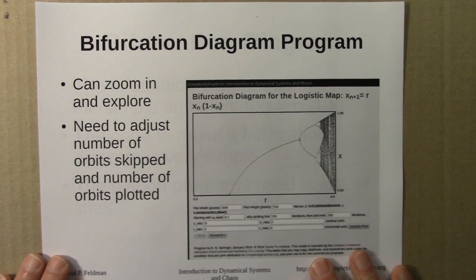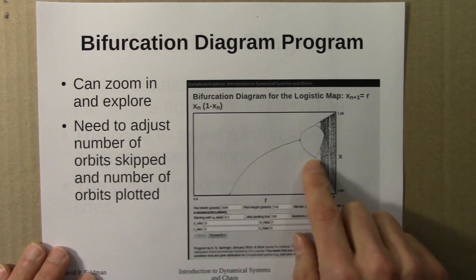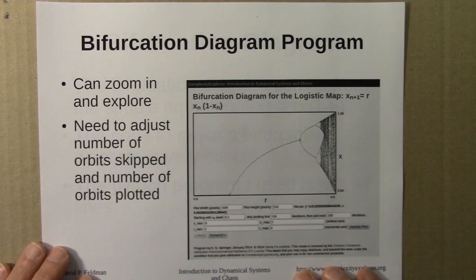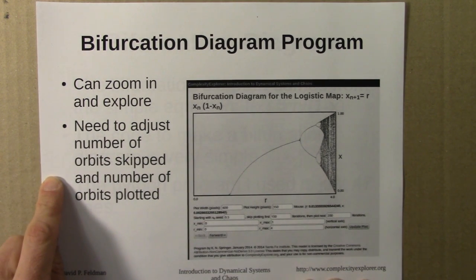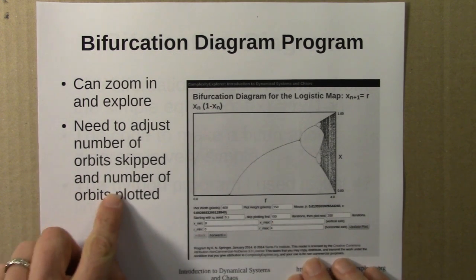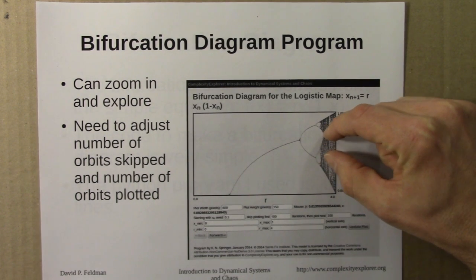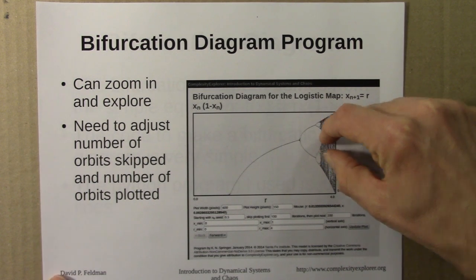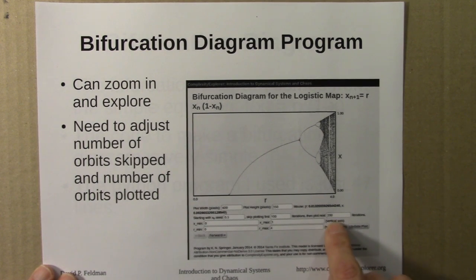I introduced a web program that lets you zoom in on the bifurcation diagram many, many times to explore what you see. Along the way, we sometimes needed to adjust the number of orbits skipped, which is necessary when there's long transient behavior — it takes a long time to reach the final states. Sometimes we also need to increase the number of orbits plotted when zoomed in a lot vertically, to avoid losing resolution. Just keep in mind that plotting more points takes longer, so don't set this too large unless you're zoomed in a fair amount.